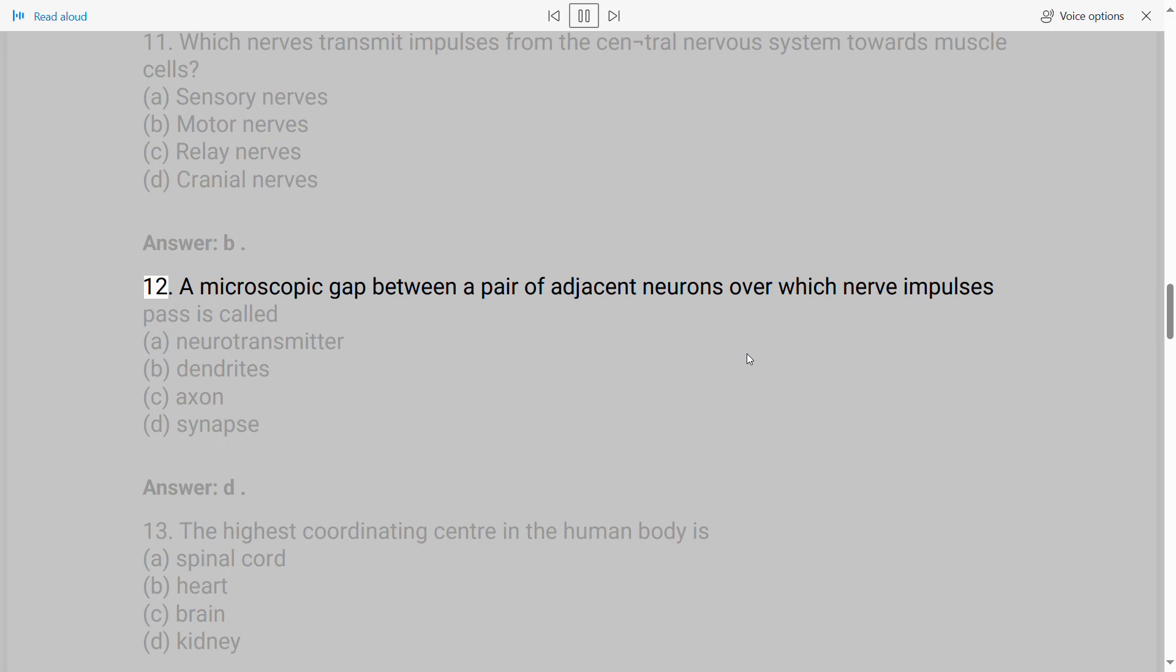12. A microscopic gap between a pair of adjacent neurons over which nerve impulses pass is called A. Neurotransmitter B. Dendrites C. Axon D. Synapse. Answer: D.